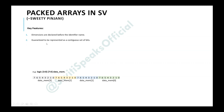The second point is they are guaranteed to be represented as a contiguous set of bits. If you see, this entire array is of 32 bits and this is how it is represented inside the memory — as a contiguous set of bits.